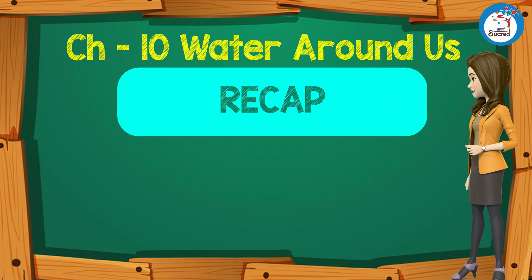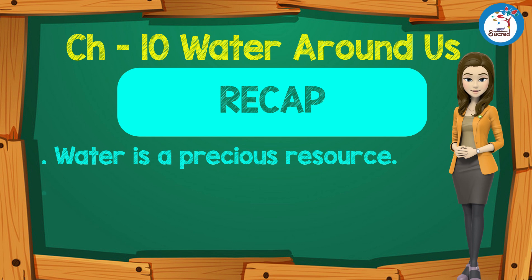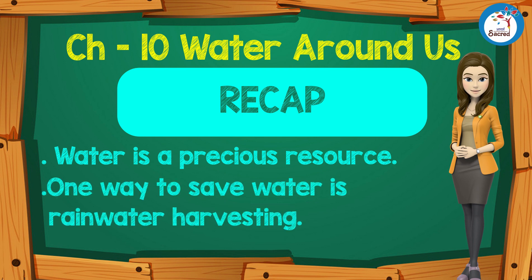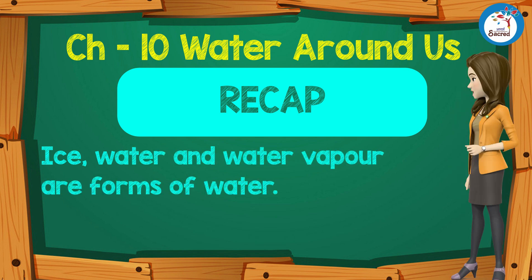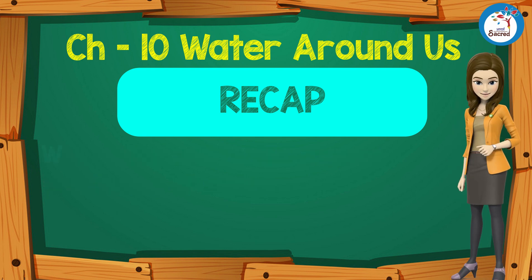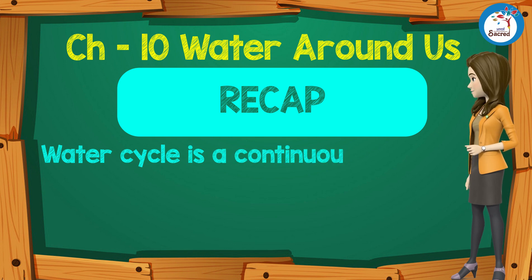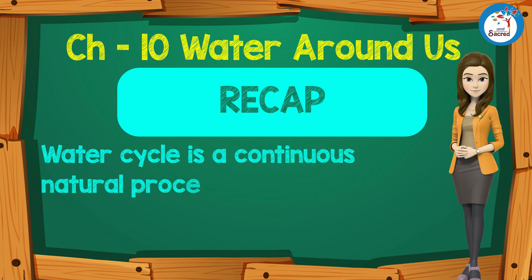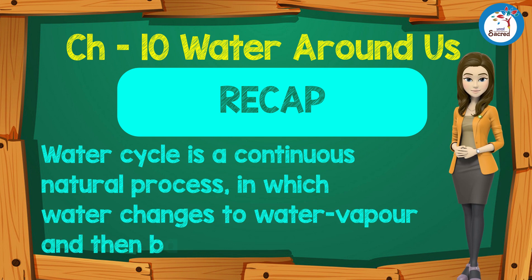Recap: Water is a precious resource. One way to save water is rainwater harvesting. Ice, water, and water vapor are the three forms of water. The water cycle is a continuous natural process in which water changes to water vapor and then back to water.